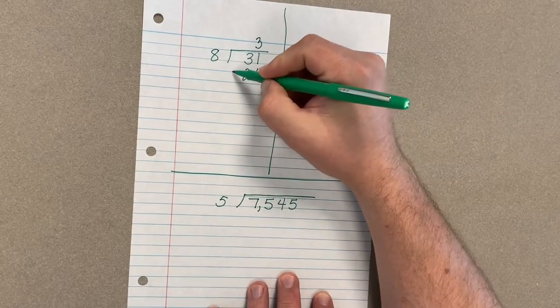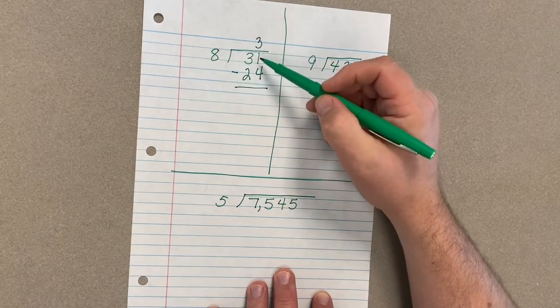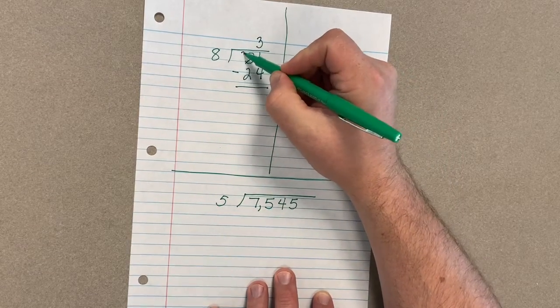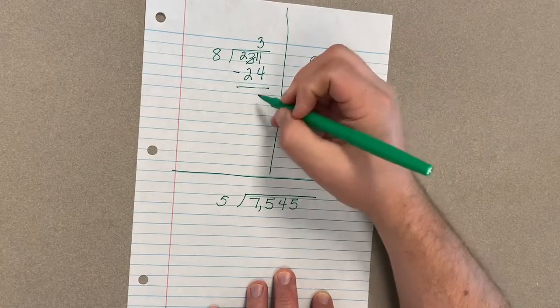Put this underneath here and I'm going to subtract and check and see what we've got. I'm going to have to borrow, make that an 11. So 11 minus 4 will give me 7.